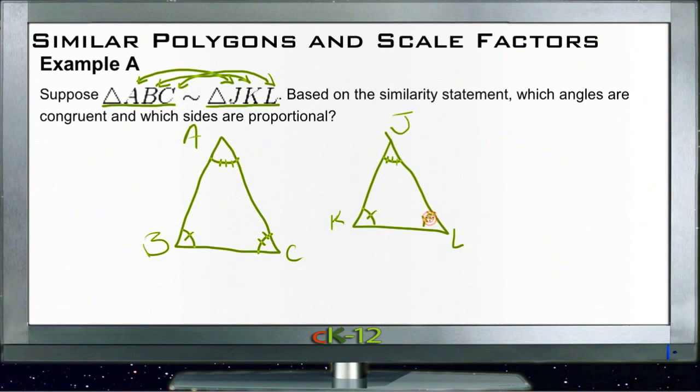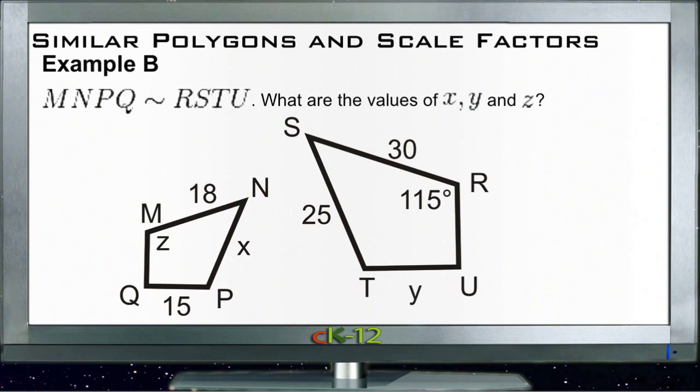So we can identify which angles are congruent, and then we know the sides that are proportional are the sides which are corresponding. So AC, this side here, is congruent to JL on the other one. And KL across the bottom is congruent to BC on the other one, and then AB of course would be congruent to JK over here. Let's take a look at example B.